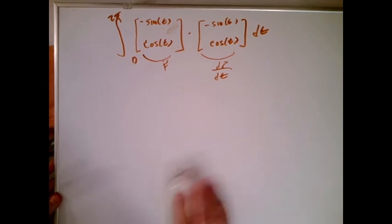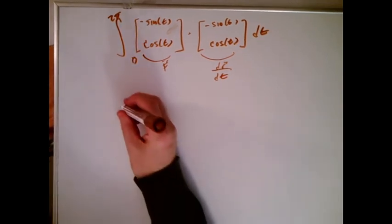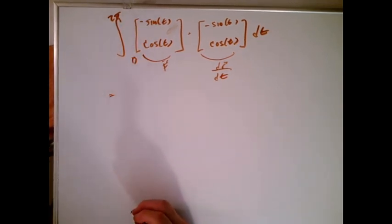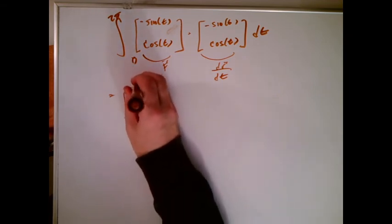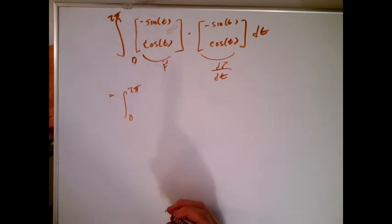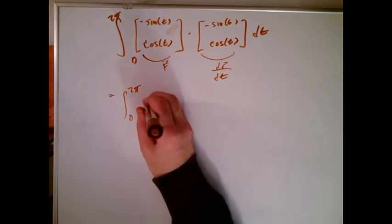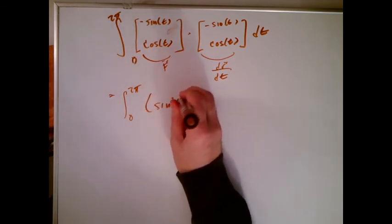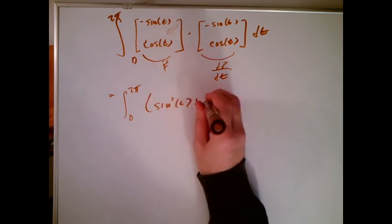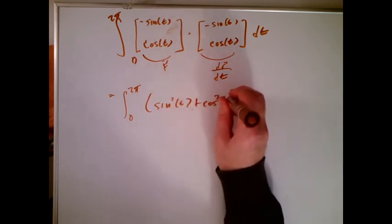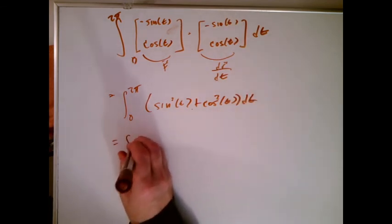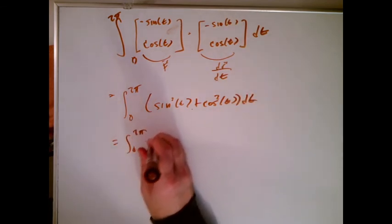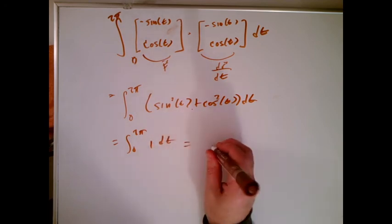And we are so close to getting an integral we can do. So now we're going to turn this into an integral we can do because we're being asked to dot those two vectors. Well, we know how to dot two vectors. We just multiply the corresponding components together and add them together. So I'm going to get sine squared plus cosine squared dt. That's just one dt. We do the derivative.